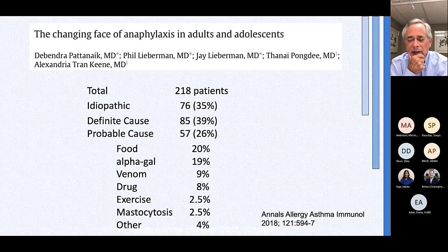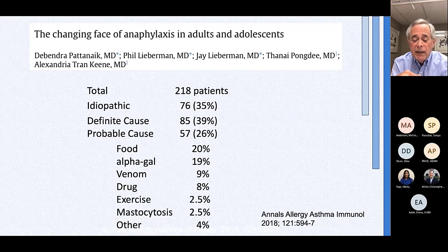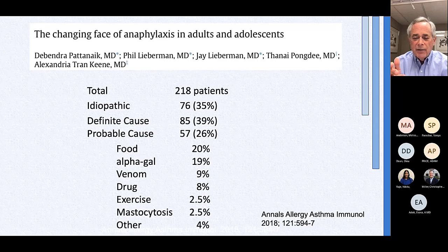Phil Lieberman, Jay Lieberman, and their group published on the changing spectrum of anaphylaxis causes. In their 218 patients, 35% were idiopathic — down from nearly 50% in a previous publication — because alpha-gal is now one of the most common causes in their Tennessee population, given that region's high prevalence of lone star tick bites and alpha-gal sensitization. They are a tertiary referral center for the most puzzling anaphylaxis cases, which likely accounts for their higher idiopathic rate.